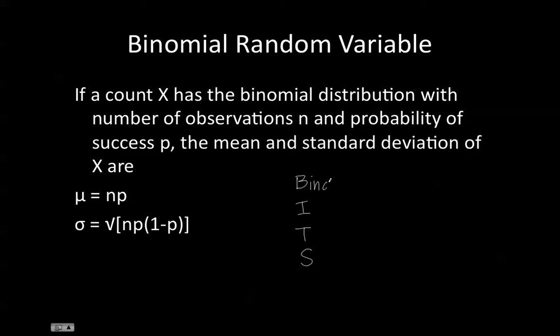So B stands for binary, so there's only two options, normally success or fail. Each of the events are independent, and the trial number is fixed.